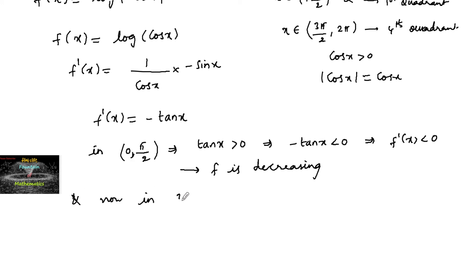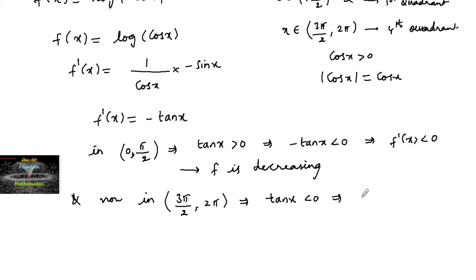Now in (3π/2, 2π), which is the fourth quadrant, tan x is negative. So minus tan x will be positive, that is f'(x) is greater than 0. Therefore, in this interval, f is increasing.